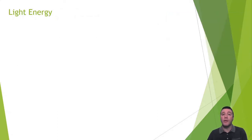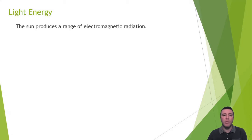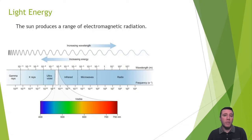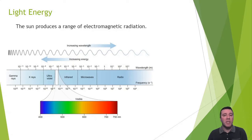As a result of nuclear fusion, the sun produces a variety and range of electromagnetic radiation. For example, we can perceive infrared radiation as the sun's warmth. Destructive ultraviolet radiation, thankfully, is mostly blocked by the Earth's ozone layer. But visible light is the range of electromagnetic radiation that we can perceive with our eyes. Based on the wavelength, we perceive different colors of this visible light.